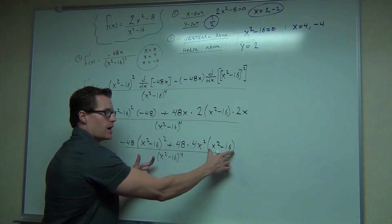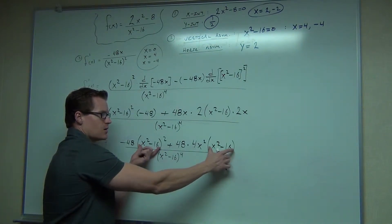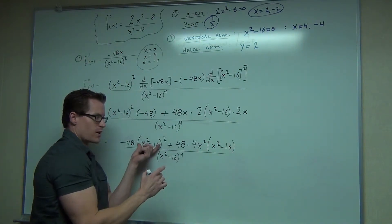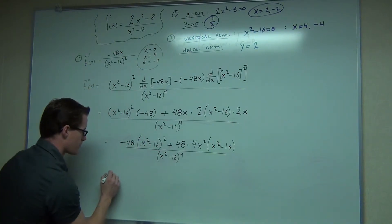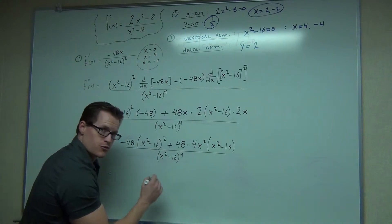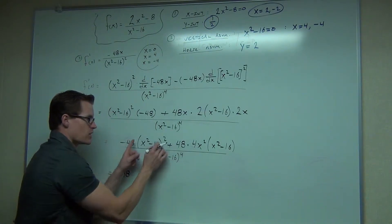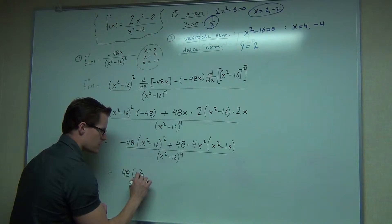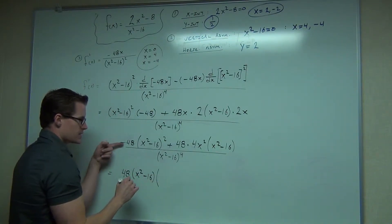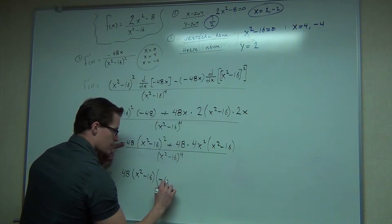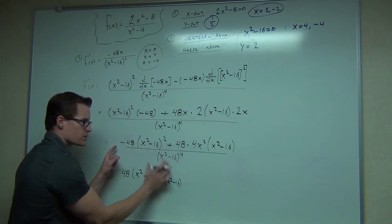So I'll be factoring out my 48 from right here. Also, I'll be factoring out x squared minus 16 from here and one of them from right here. So what that's going to leave us, be careful on your signs. Check this out. Factor out your 48. Factor out one of your x squared minus 16. What you're left with is negative x squared minus 16. Negative and one of those is remaining.